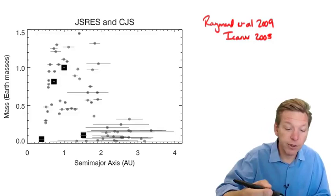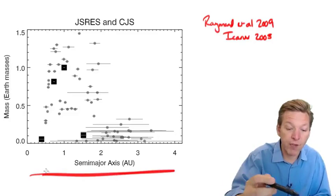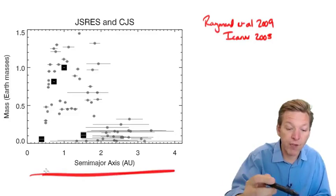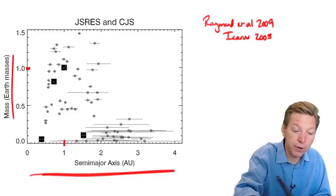What do you get instead? Here's a set of simulations where this has been attempted, and we're looking at semi-major axis down here of the final planet, and mass in Earth masses up here. Here's the Earth, one AU, one Earth mass sitting right here. Here's Venus, here's Mercury, here's Mars.